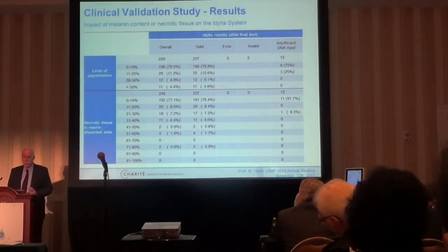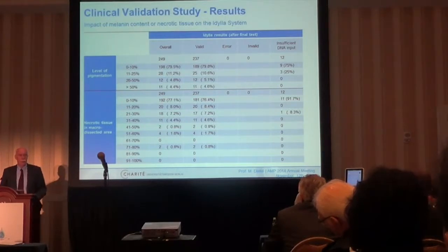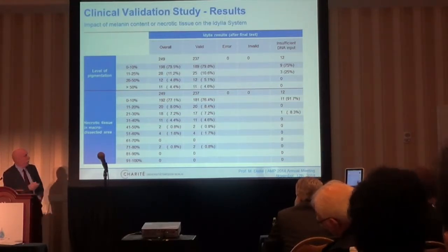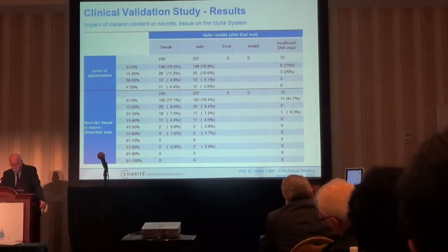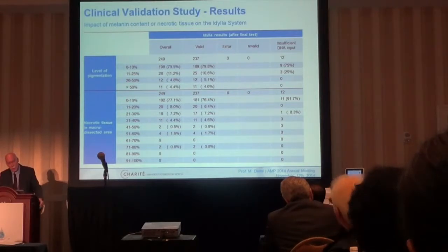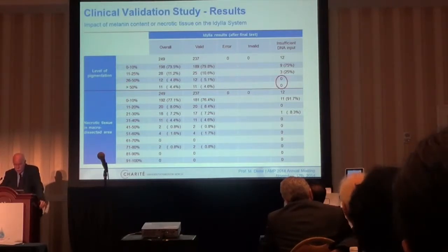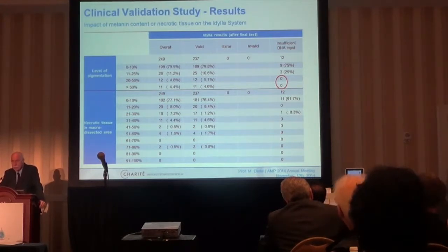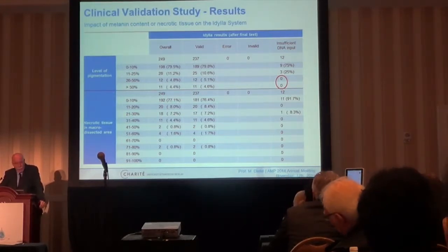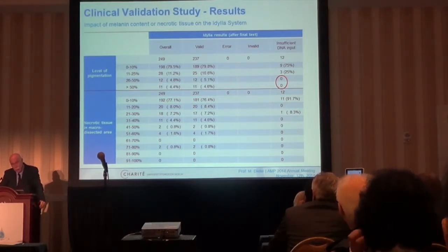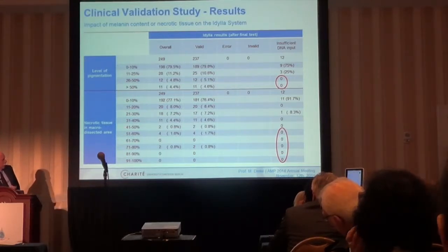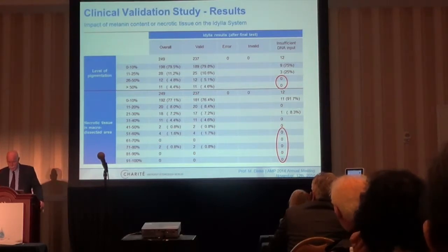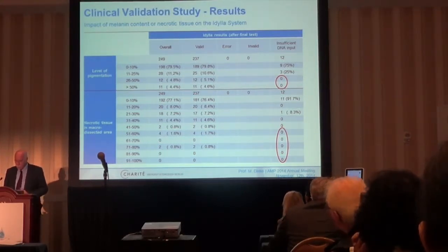For a pathologist, one major question is whether the systems also work with a high level of pigmentation — molecular melanin. There are sometimes problems when there is a high percentage of tumor cells heavily loaded with melanin. The results show that this does not influence the results of the IDYLLA system. Necrotic tissue is also sometimes a big issue, and the IDYLLA system also works well here. The percentage of the necrotic area of the tumor was relatively high and there was no influence on the results.